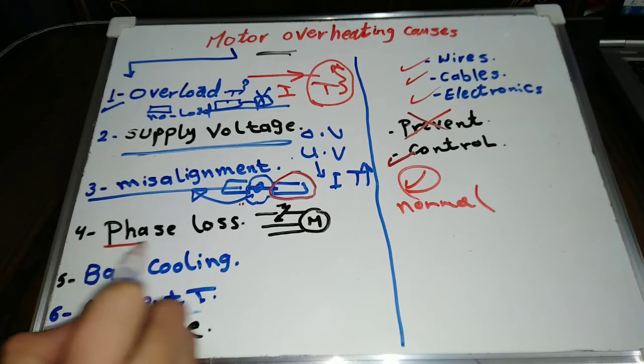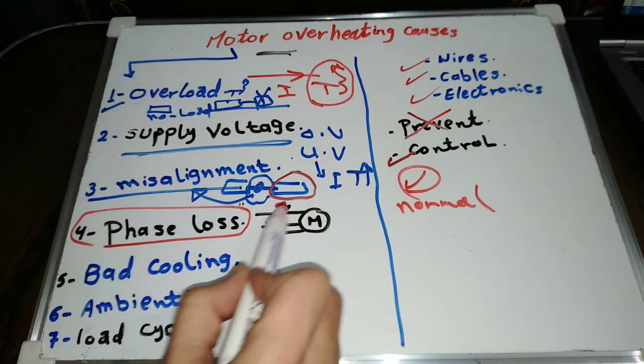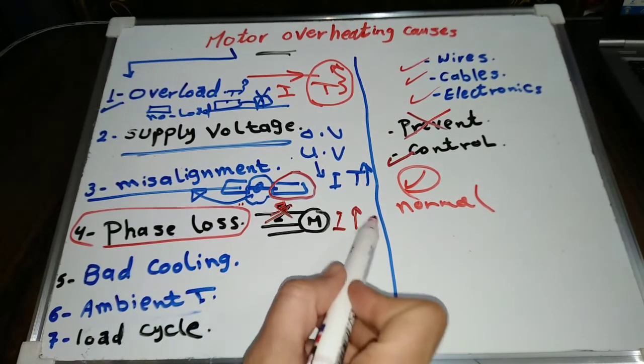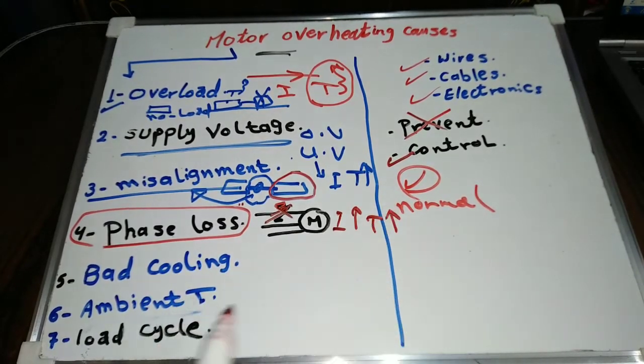Phase loss. If a three-phase motor works on two phases, we call this phase loss. It will draw higher current on the remaining two phases. Its temperature will rise and it will overheat.